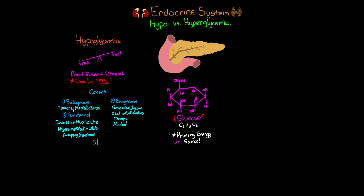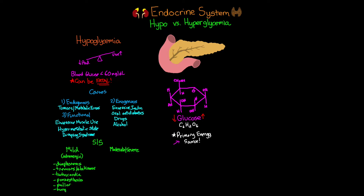Signs and symptoms of hypoglycemia depend on severity. With mild hypoglycemia, symptoms result from an adrenergic response involving the release of epinephrine, glucagon, glucocorticoids, and growth hormone. These symptoms include diaphoresis, tremors or shakiness, tachycardia, paresthesia, pallor, excessive hunger, and anxiety — essentially what you'd expect to see with an adrenergic response.